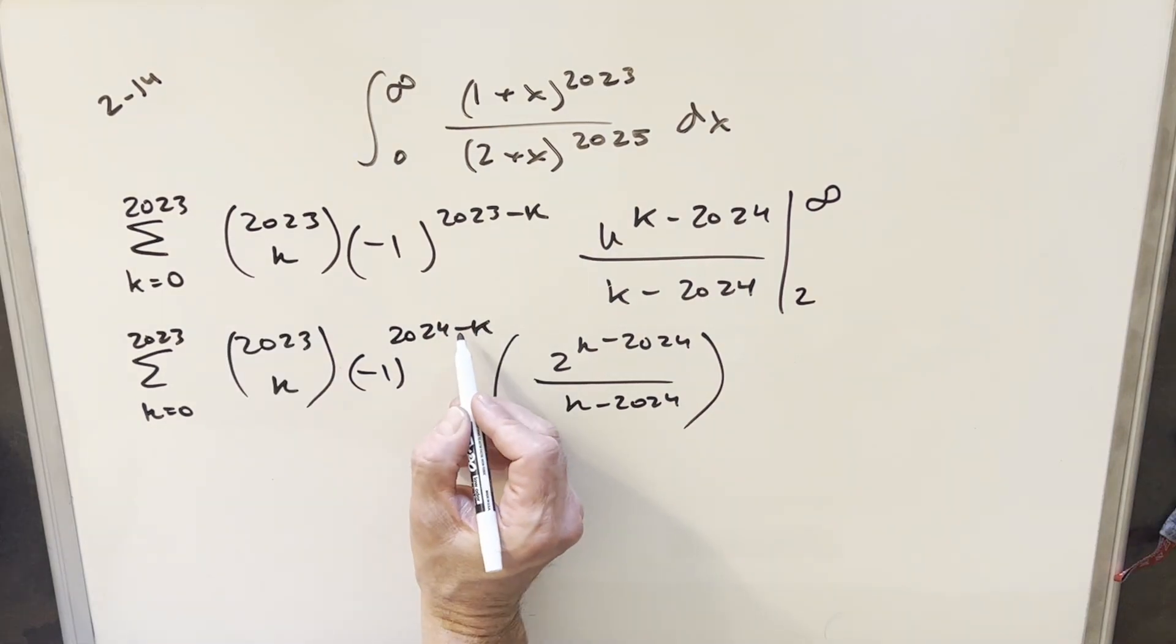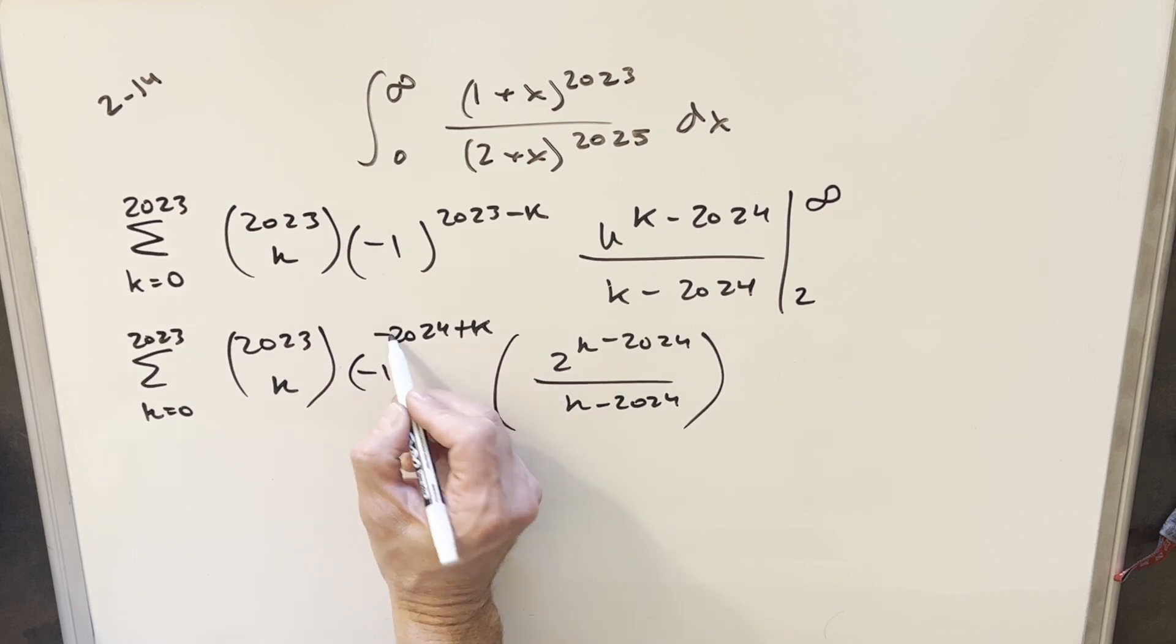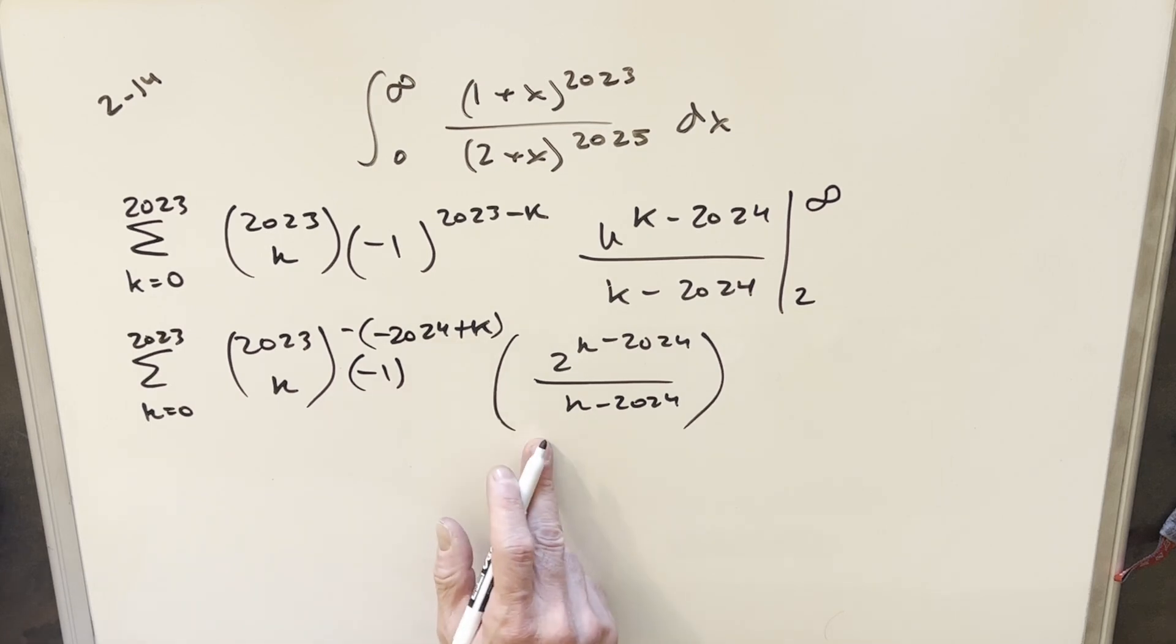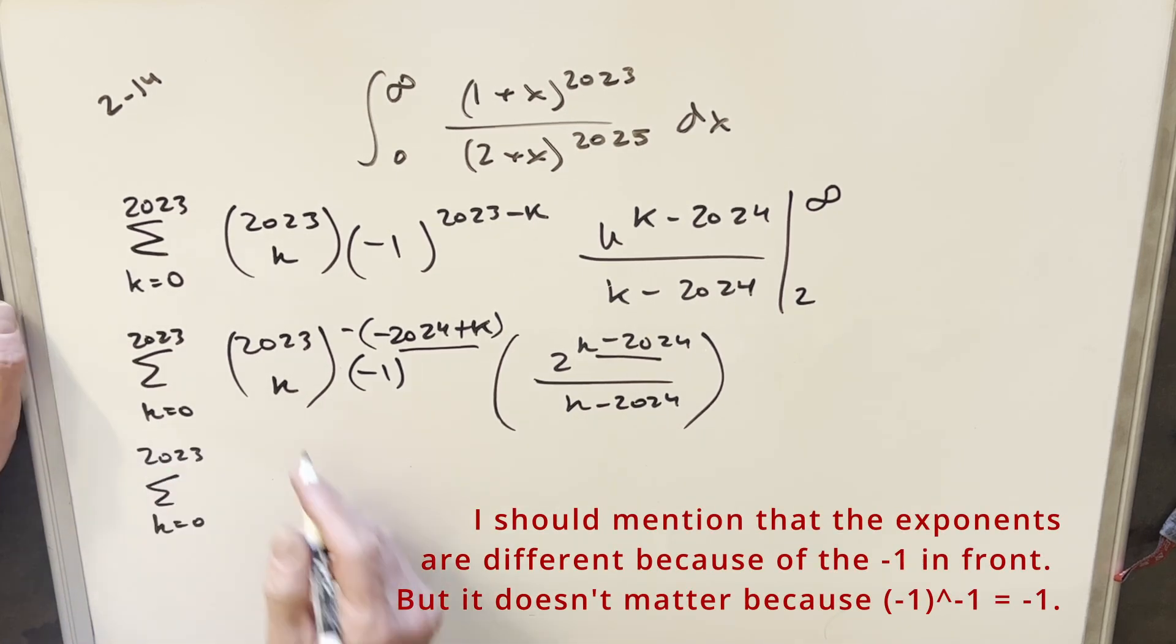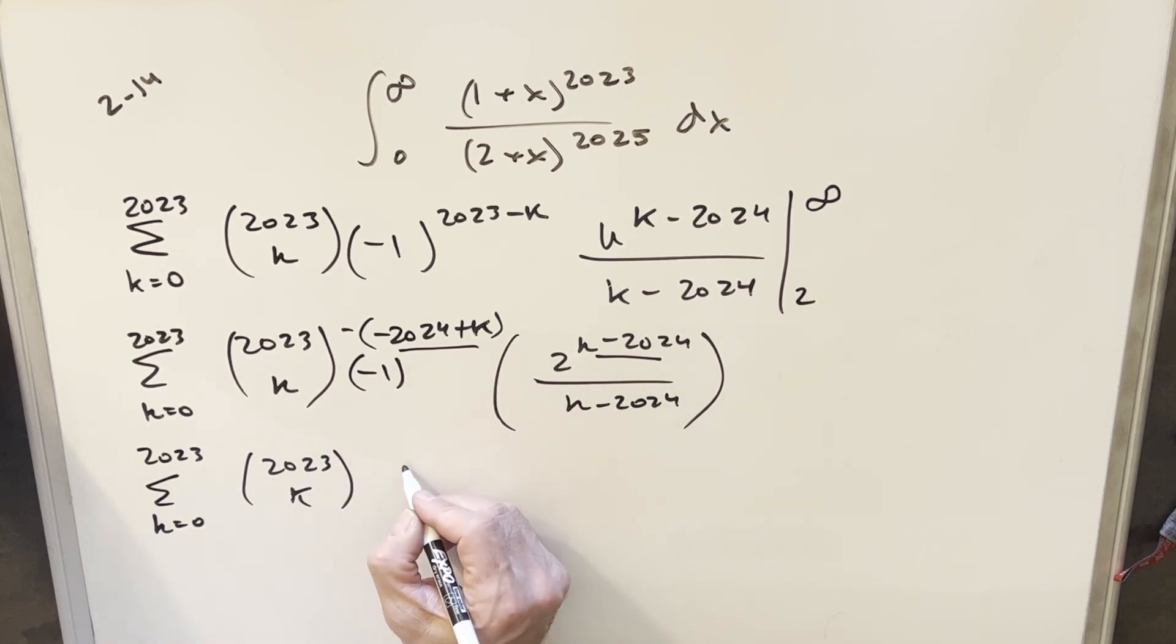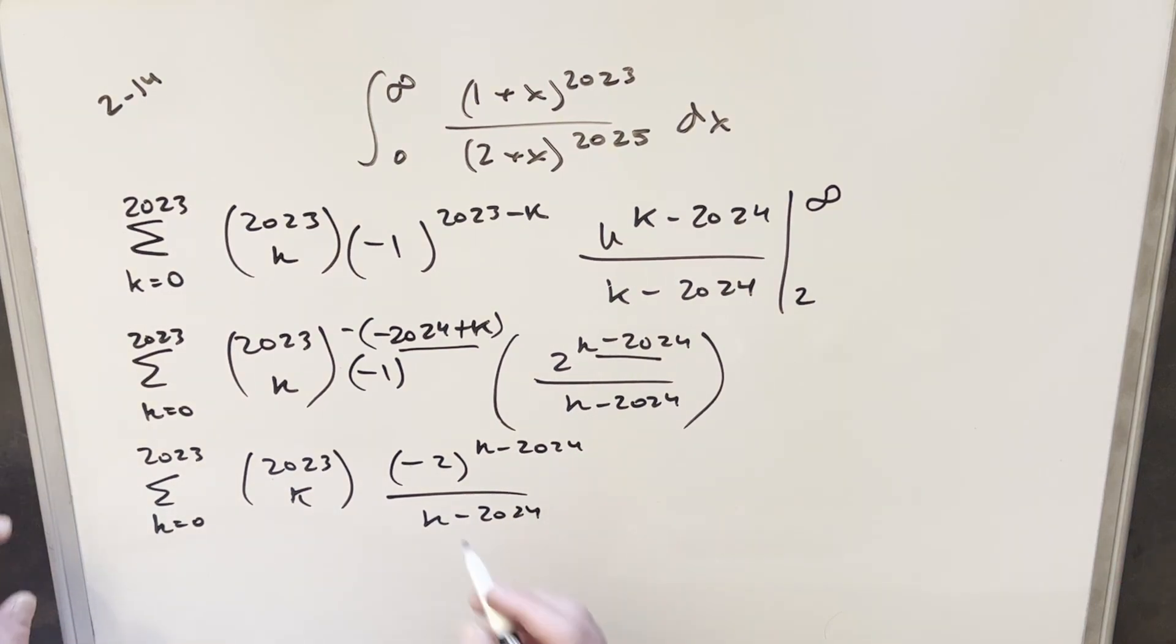But then one other thing I'm noticing just to finish this off is if I maybe reverse the sign here, and we bring a minus out front here, this brings minus one into the numerator. But then we've got the same exponent here and here. So we can then combine those two terms. So when I rewrite this, we still have the binomial coefficient up front here, 2023 choose k. But then combine the minus one and the minus two, I can write this as minus two to the k minus 2024 over k minus 2024. And I think that's about as much simplification as I can get. So we're just going to box that one and call it good.